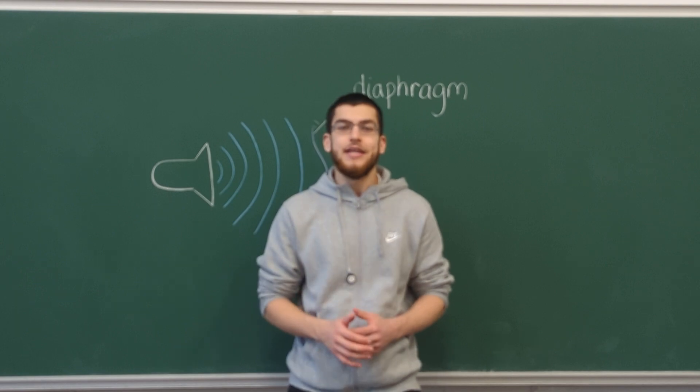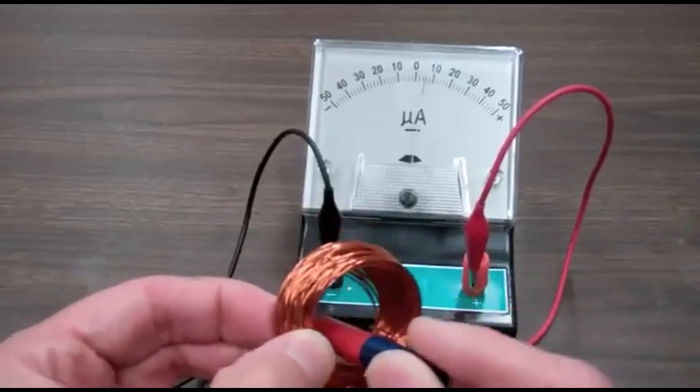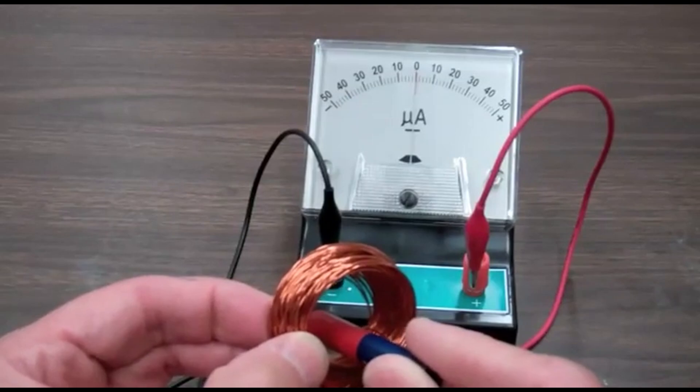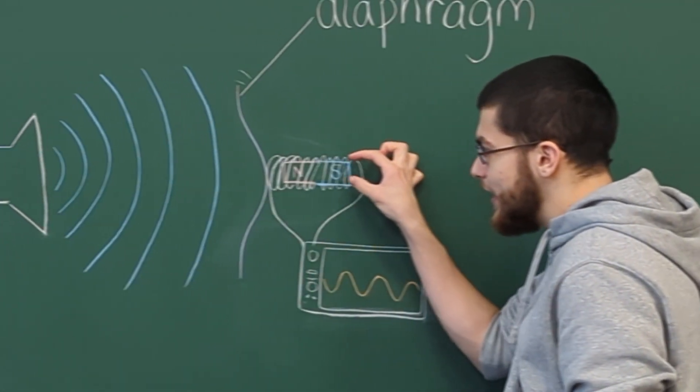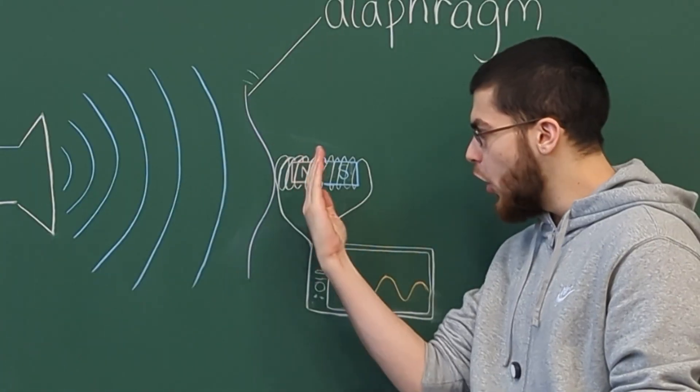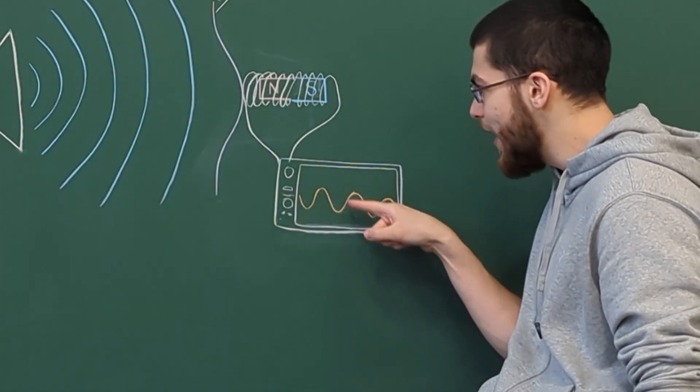The principle of electromagnetic induction states that when a coil of wire moves through a magnetic field, a current is produced in the coil. So if we attach a coil to the diaphragm and then put a magnet inside the coil, every time the coil moves, an electrical signal is produced in the wire.